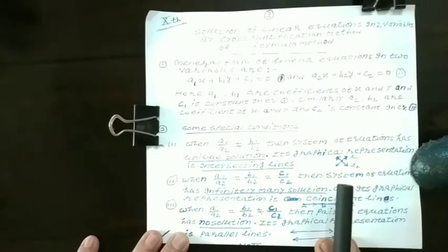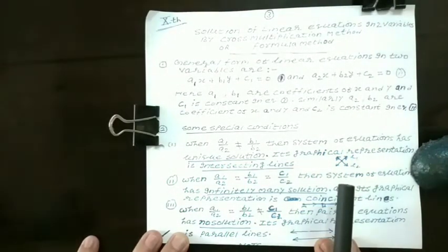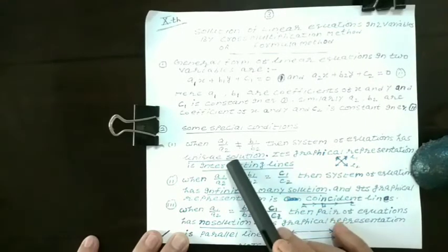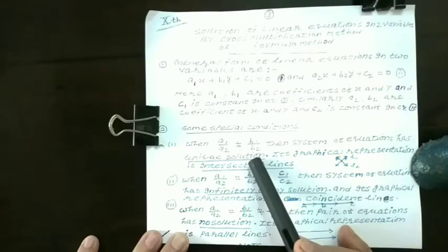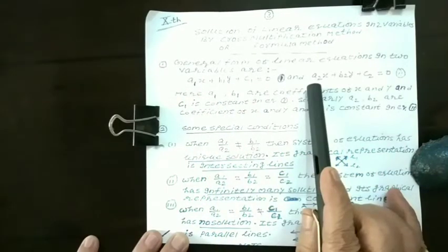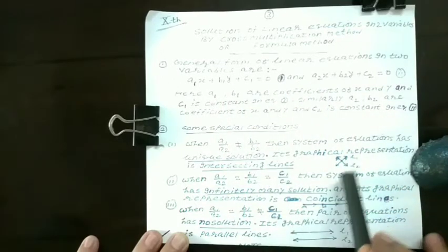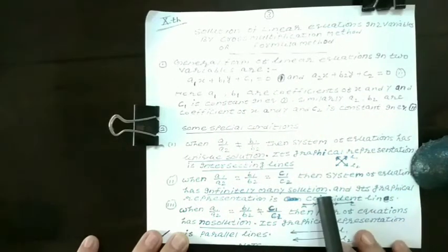Now, due to these coefficients, some special conditions arise. When a1 upon a2 is not equal to b1 upon b2, that is the ratio of a1 and a2 and b1 and b2 is not equal, then the system of equations has unique solution.